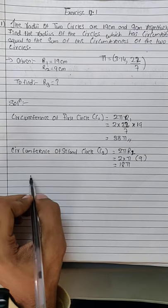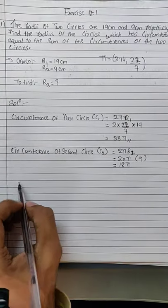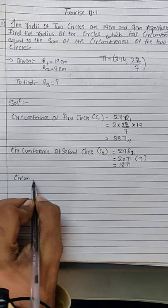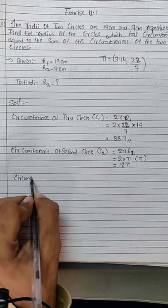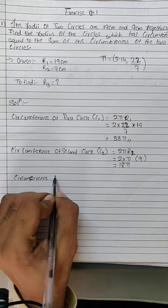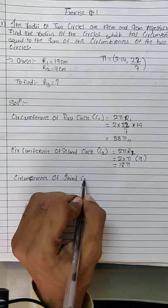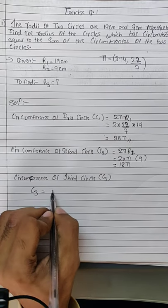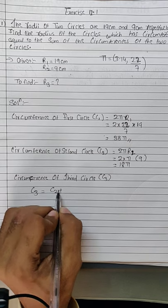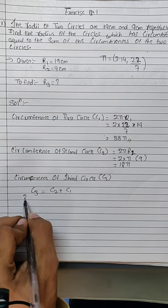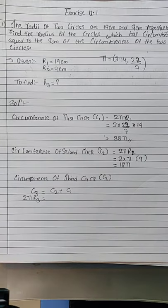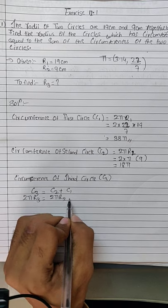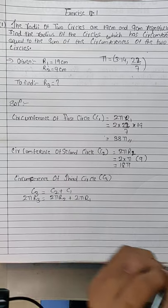Now, the circumference of the third circle C3 should be equal to C1 + C2, according to the condition. The formula for C3 is 2πr3. C2 is 2πr2 and C1 is 2πr1. So: 2πr3 = 2πr2 + 2πr1.